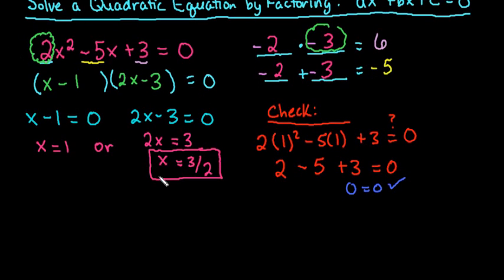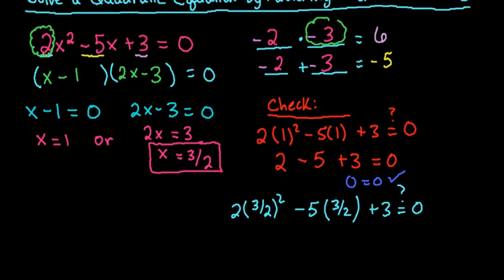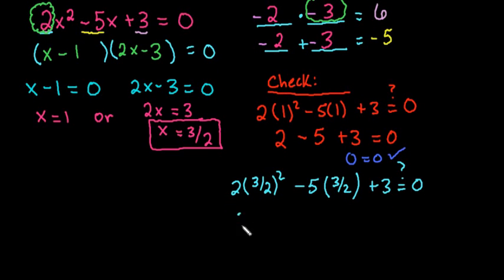The second one is a little bit harder to check because it's a fraction, and I know most people don't like to deal with fractions. Fractions don't have to be scary. When we plug this in, you're just plugging in your value for x, and we're going to see, does this give us 0? I would start by squaring our fraction term first. This gives us 2 times 9/4, because 3 squared is 9 and 2 squared is 4.